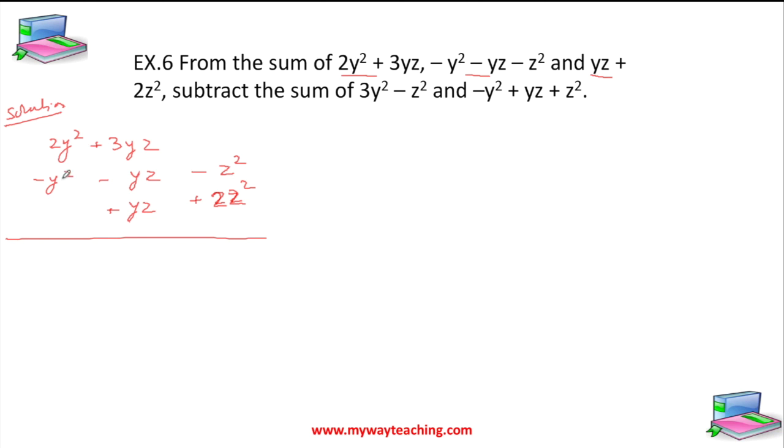Because we are adding, we are not changing the sign. So 2y² minus y² gives y². 3yz cancels to 3yz. 2z² minus z² plus z², this is z².